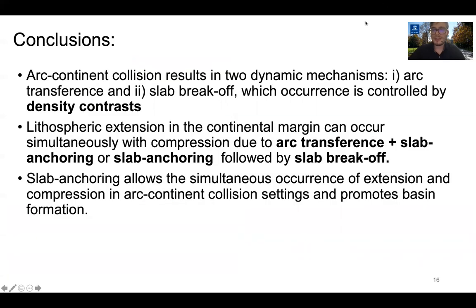In conclusion, arc-continent collision results in two dynamic mechanisms — arc transference plus slab anchoring, and slab break-off — whose occurrence is controlled by density contrast between the arc and the continental plate. Lithospheric extension can occur simultaneously with compression due to arc transference with slab anchoring, or slab anchoring followed by slab break-off. Finally, slab anchoring allows the simultaneous occurrence of extension and compression in arc-continent collision settings, promoting the formation of basins in the continental plate.